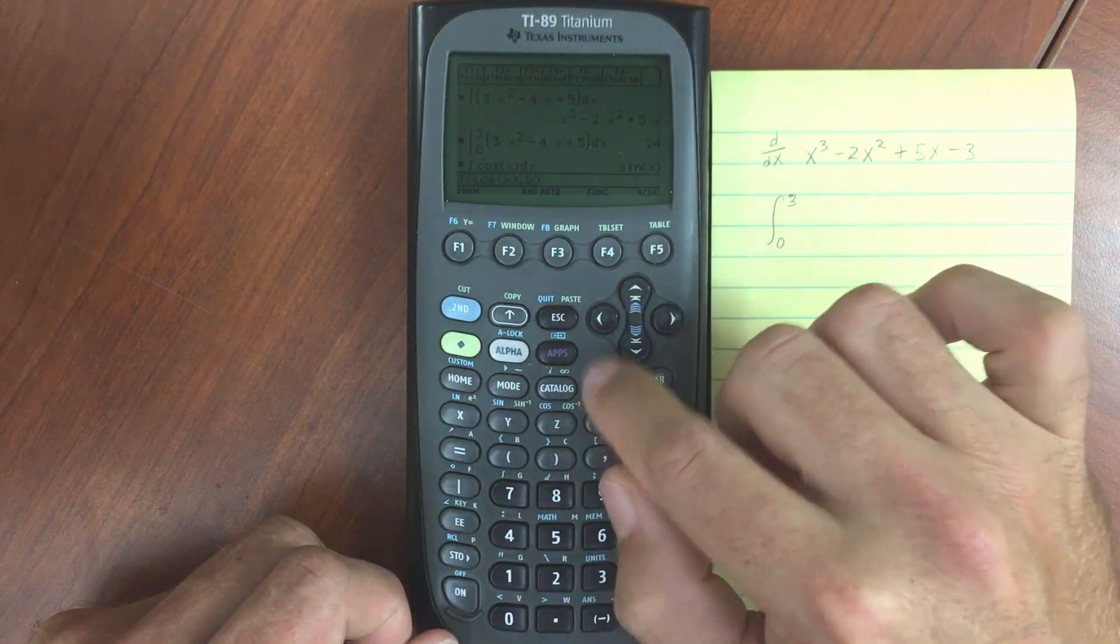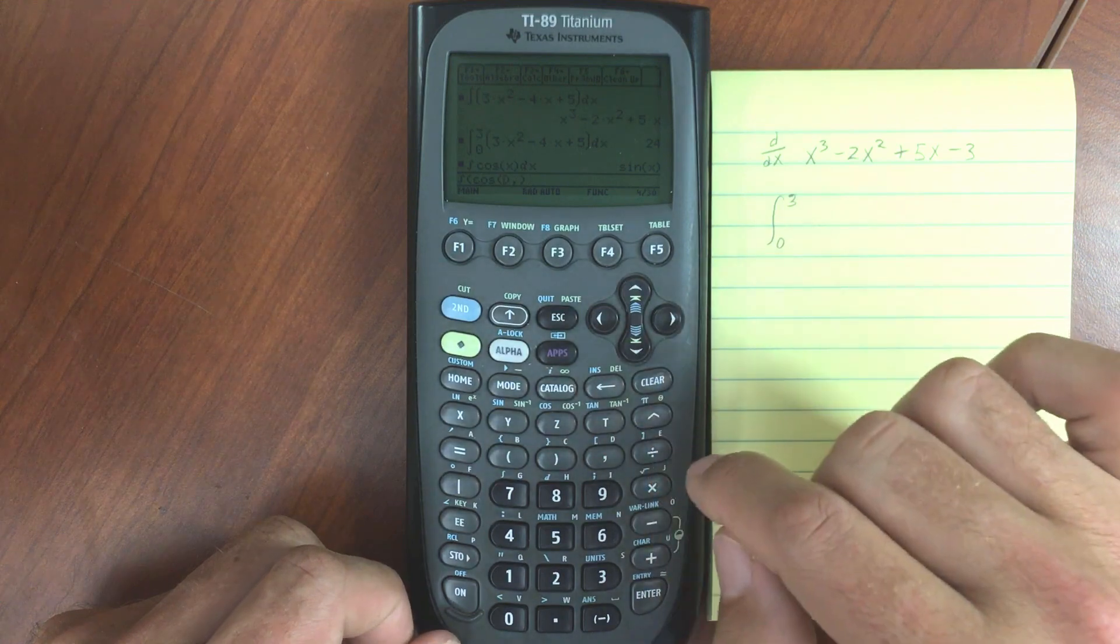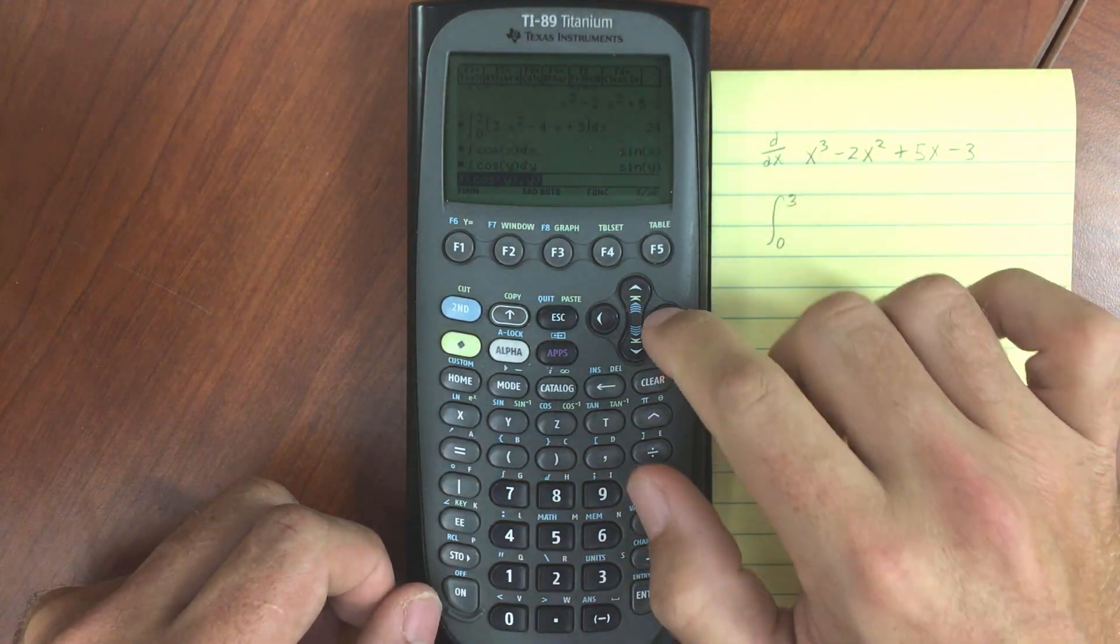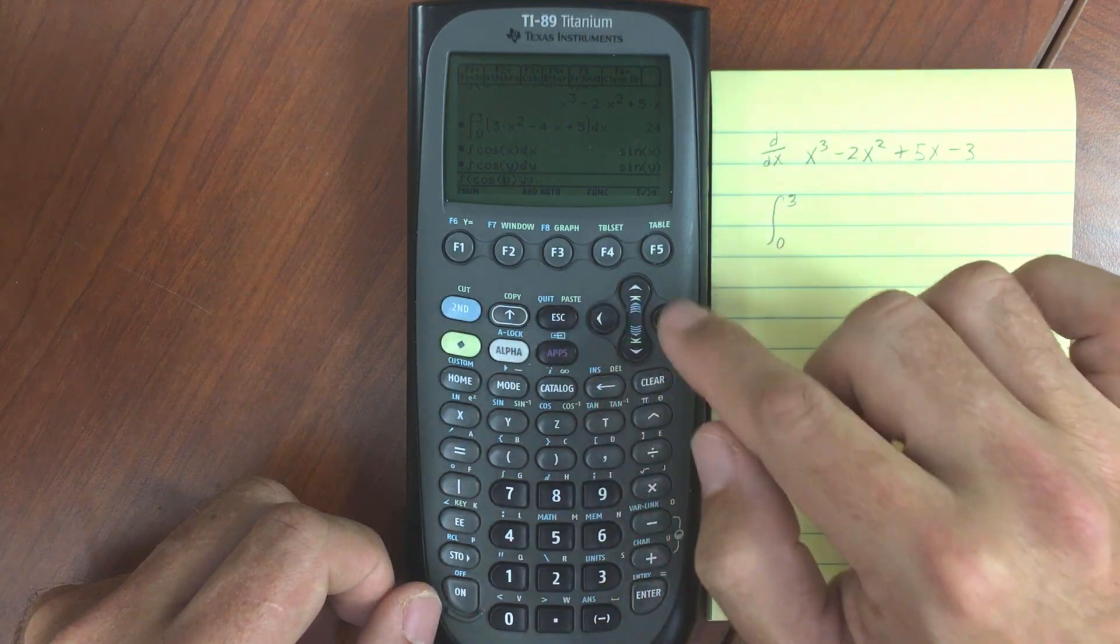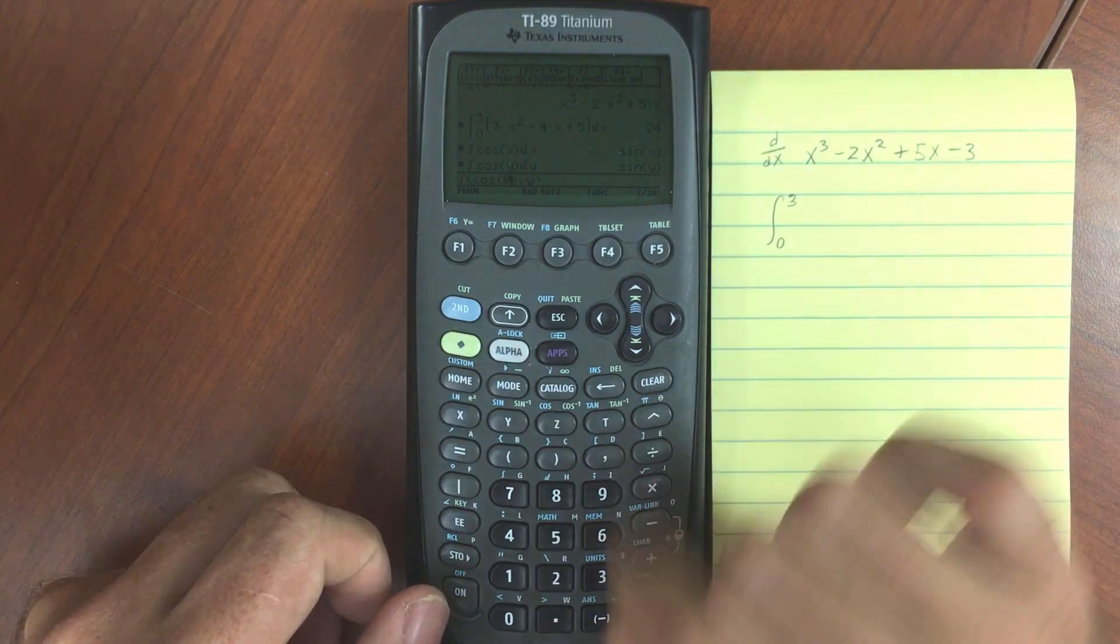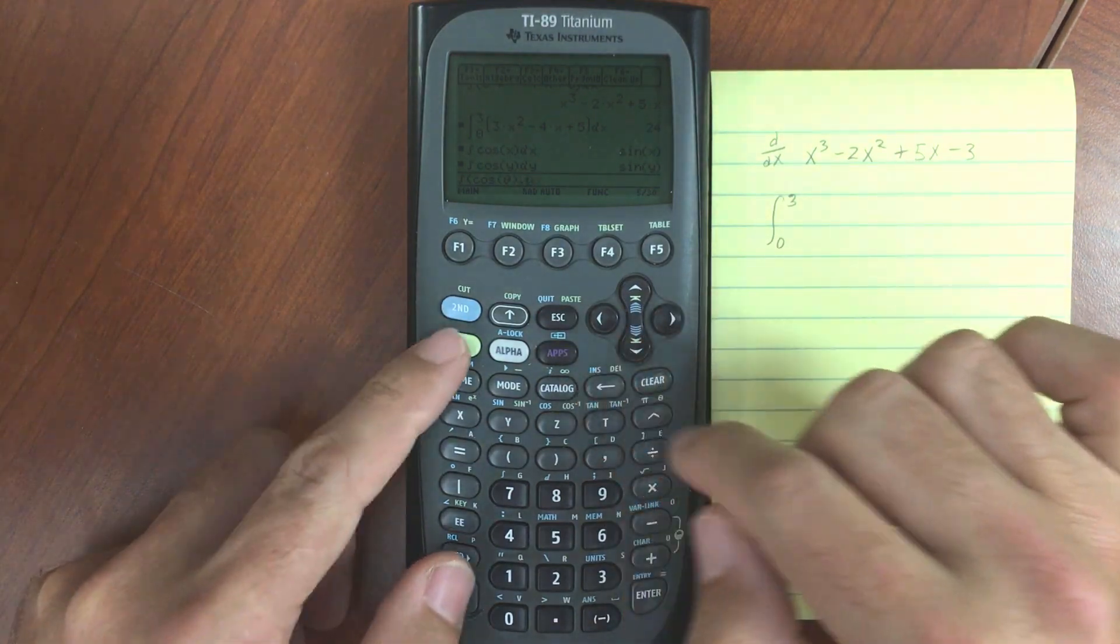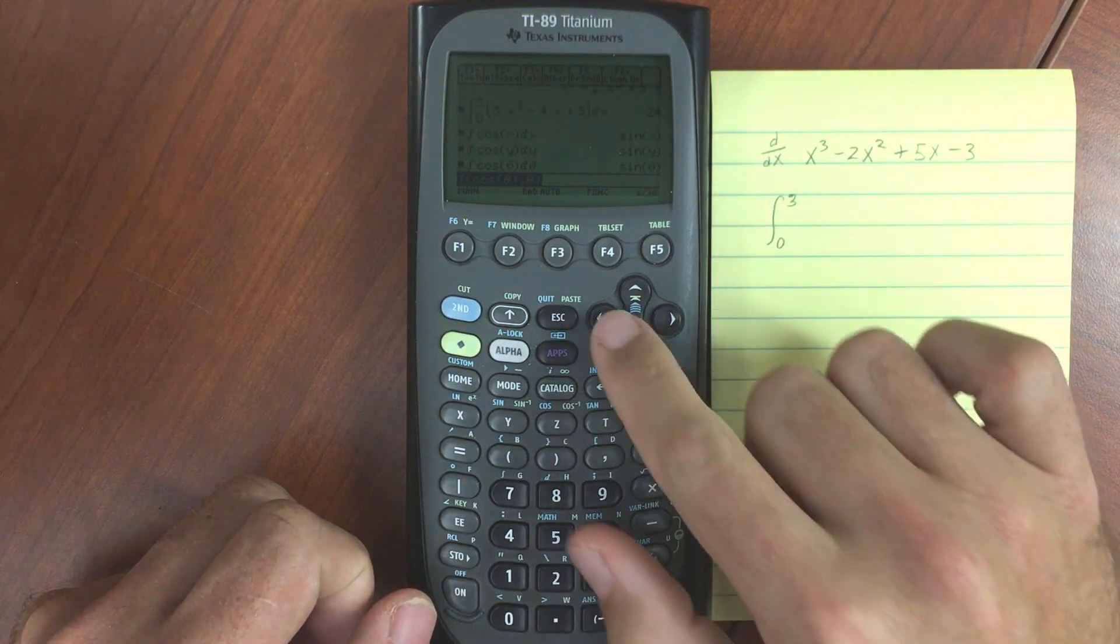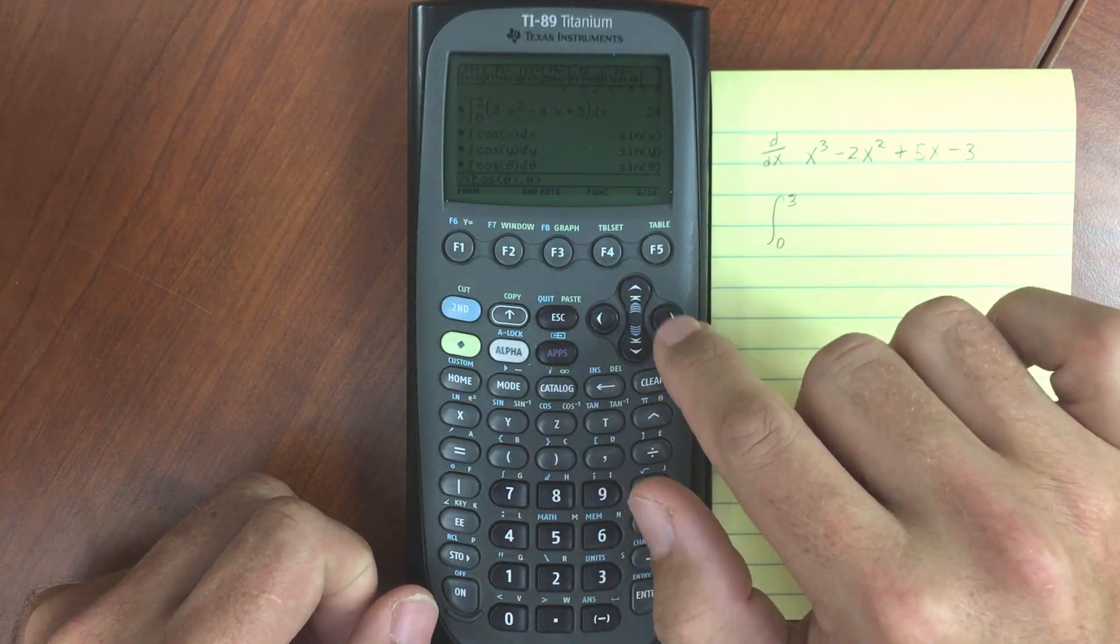You can also do with respect to other variables. So I could do y, sine y of course. And theta. That's just green shift and theta key over here.